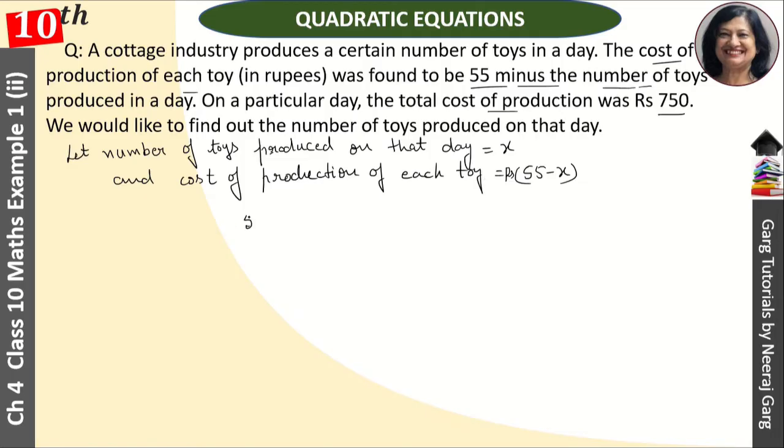Look, cost of one toy is 55 minus x and total toys is x. So we multiply that, which is equal to 750.